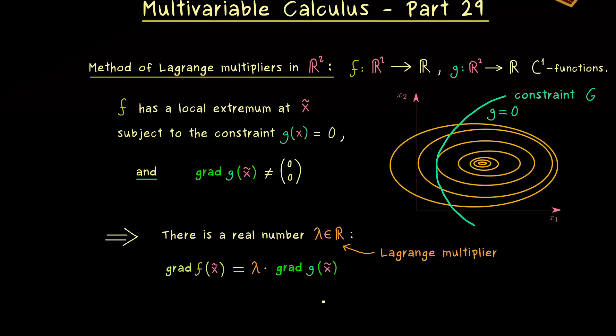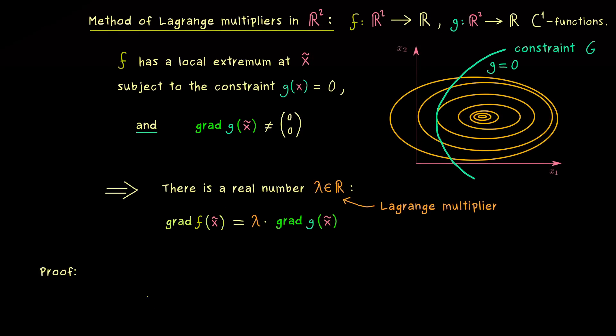And this is the theorem we want to prove now. And we will see that we just need the implicit function theorem for it. So we have two conditions here at the point x̃. So let's assume this is condition 1 and the other one is condition 2.